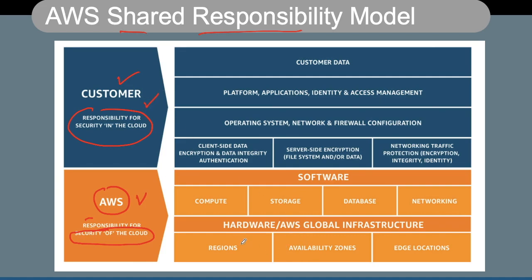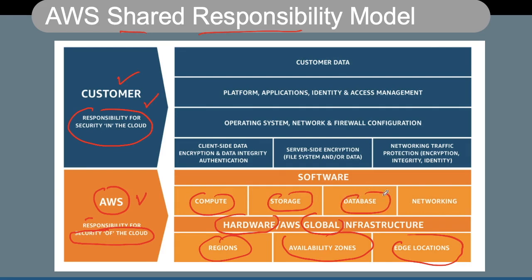All regions, availability zones, edge locations, hardware, global infrastructure, compute, storage, databases, networking, and the underlying software are the responsibility of AWS. However, operating systems, network and firewall configuration, platform, applications, identity and access management, and customer data are the responsibility of the end customer.